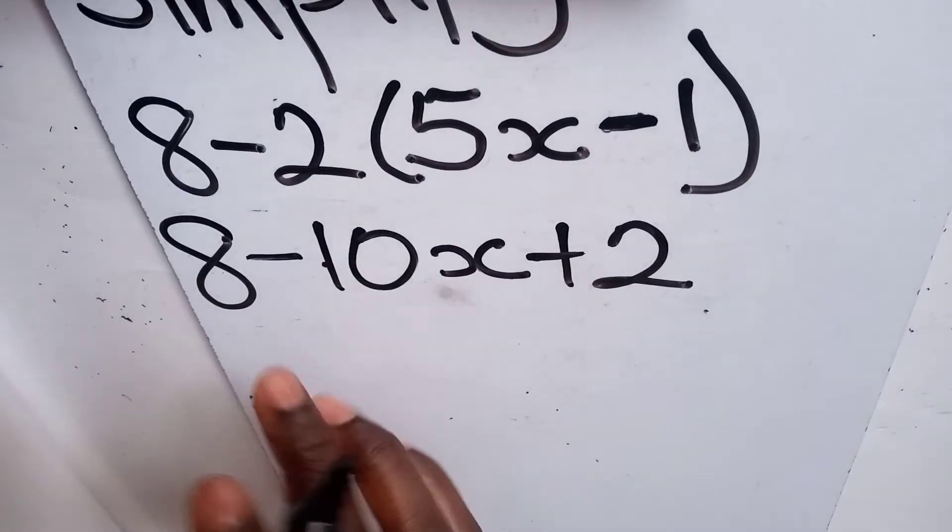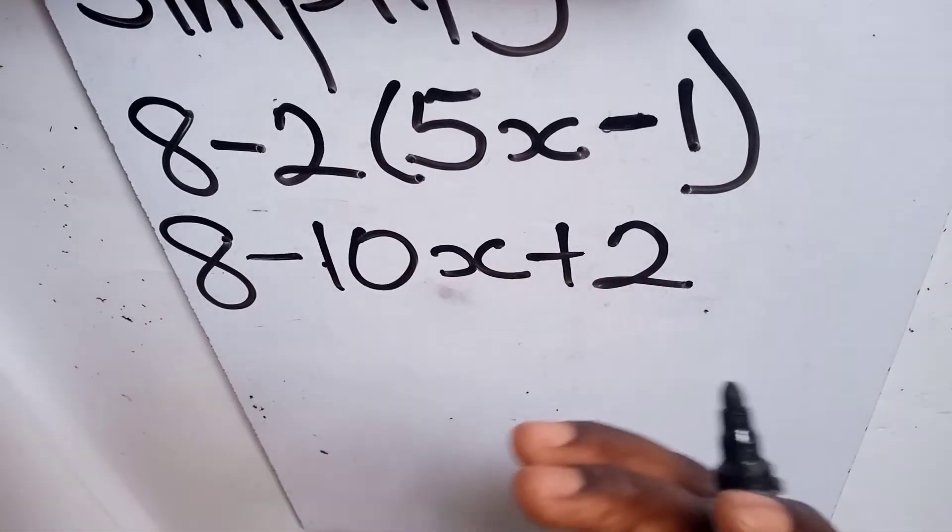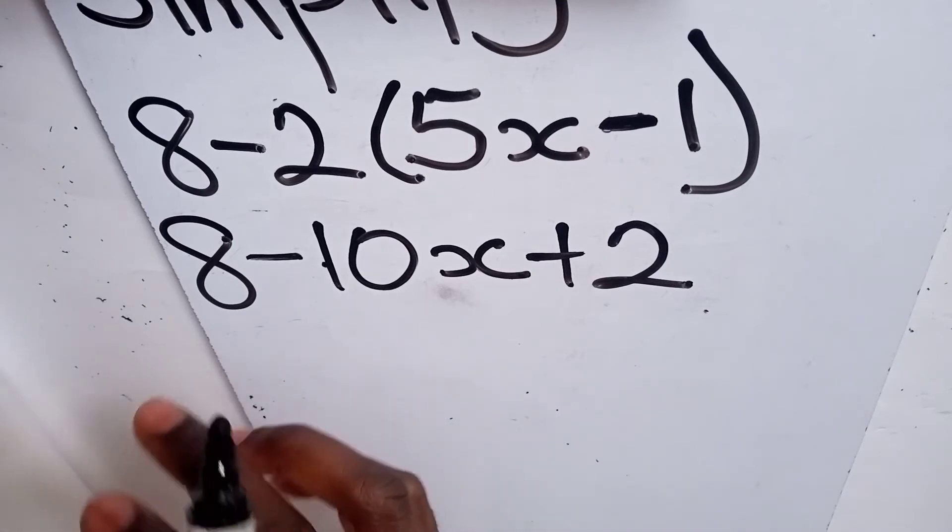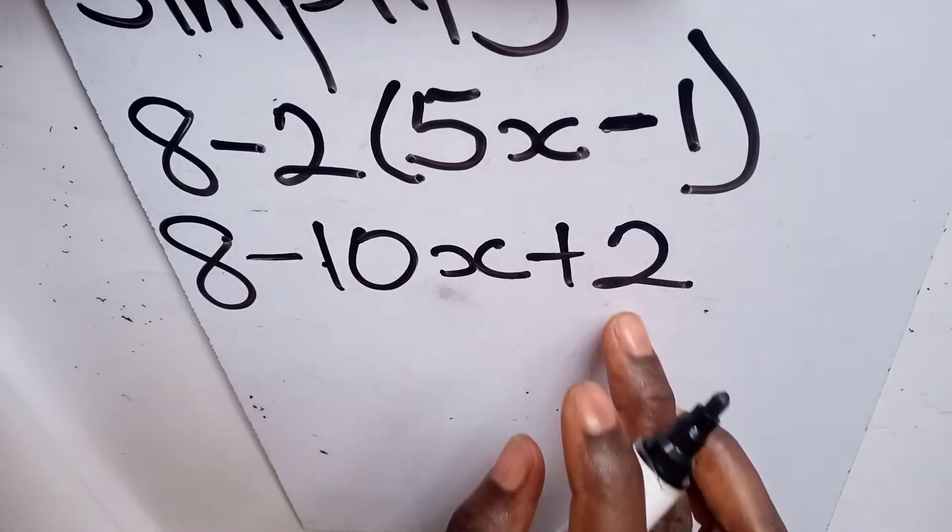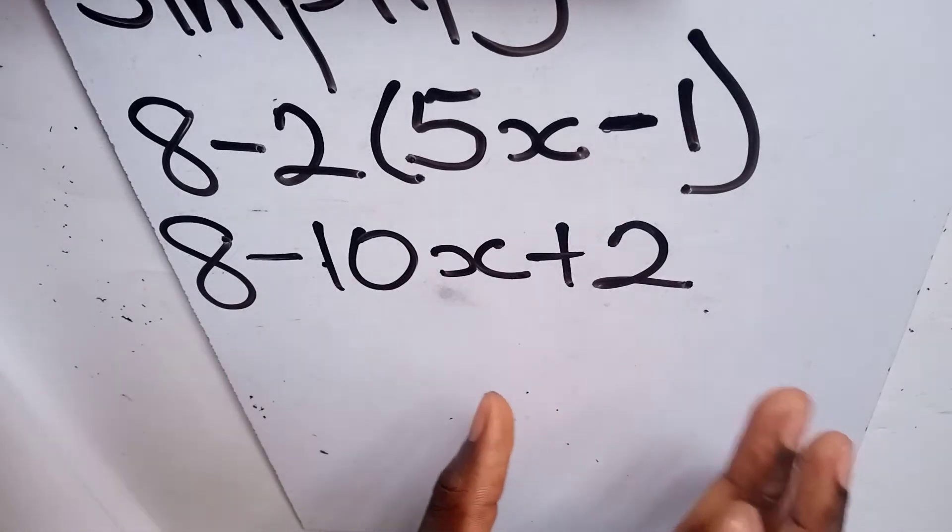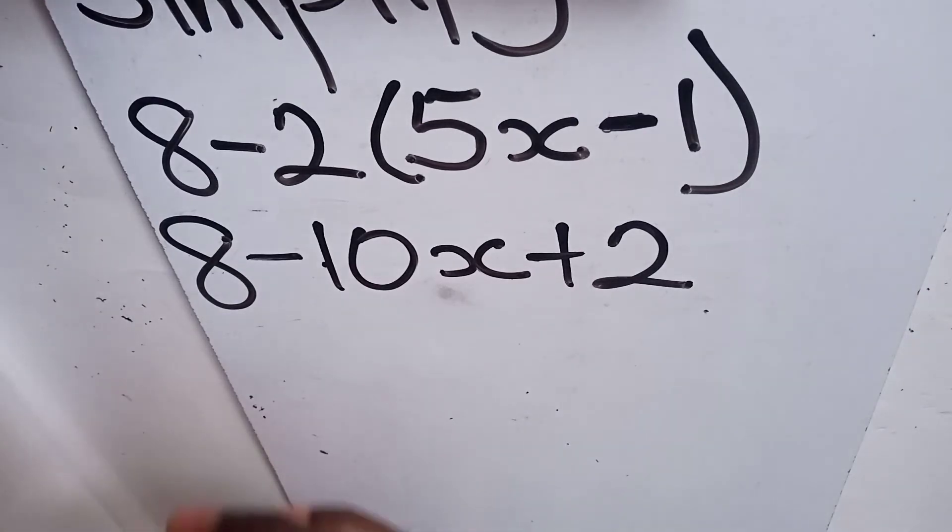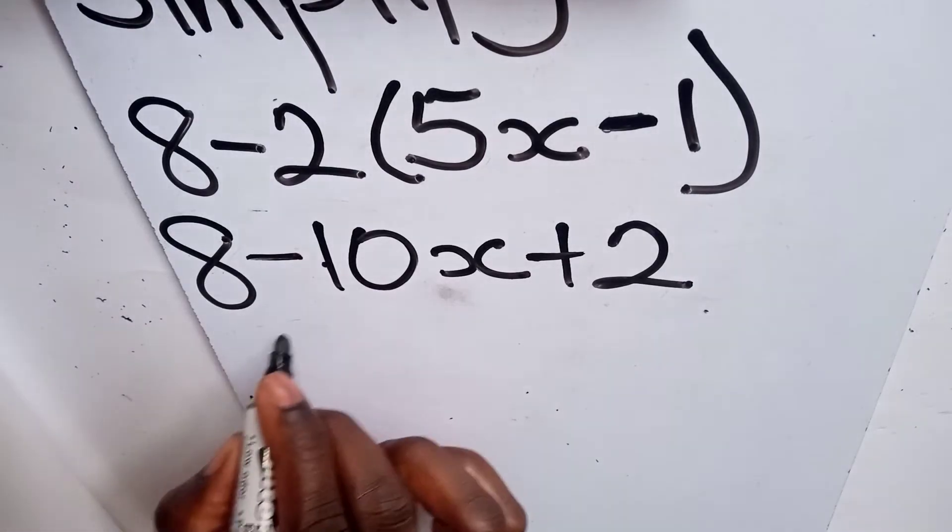So after this, now we are going to group like terms. We see 8 and then 2 are constant numbers, so we can put them together. And then those that are not constant, we send them also to the other side. So let's group the like terms.